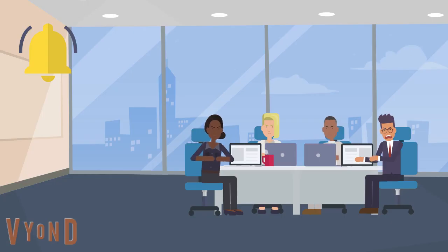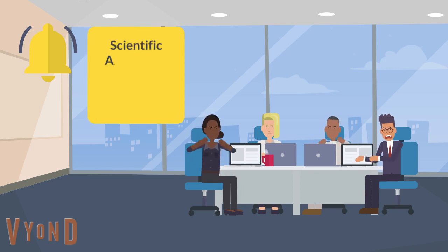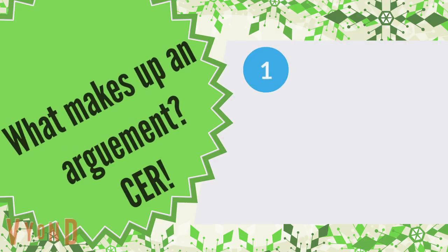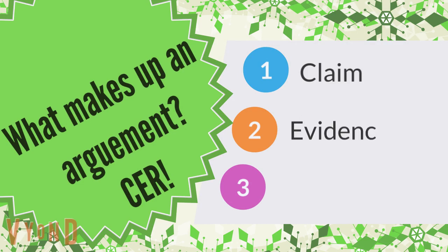Scientific argumentation is not based on opinions. Scientific arguments are made up of claim, evidence, and reasoning. A scientific argument uses evidence to make a case for whether a scientific idea is accurate or inaccurate.